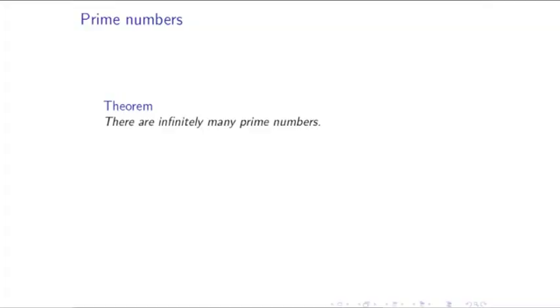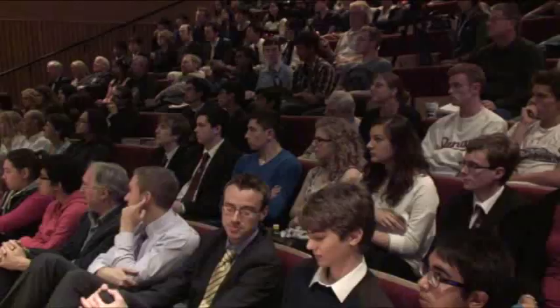A couple of things we might want to know about prime numbers: how many are there? Are we going to run out at some point? If I had a very large slide, would I get to the biggest prime number and from then on all numbers would be composite? It turns out there are infinitely many prime numbers — we're not going to run out. This is a theorem, a mathematical fact I know with absolute certainty because I can prove it. If you haven't seen a proof, I recommend you look one up.